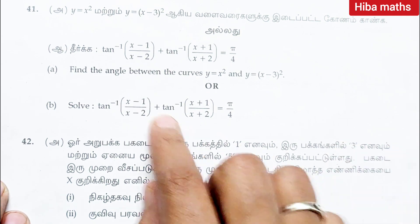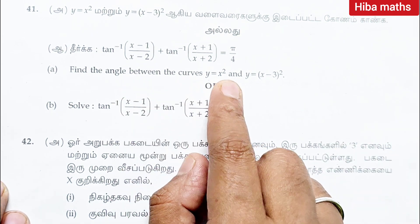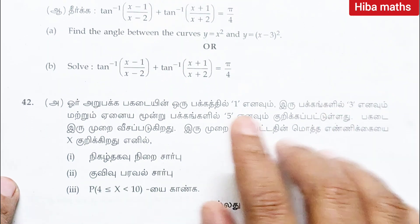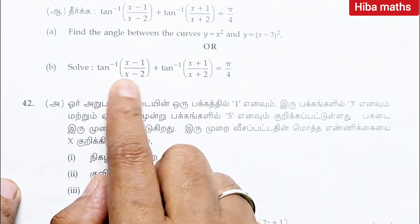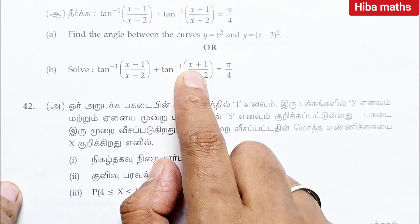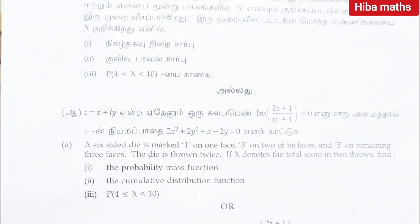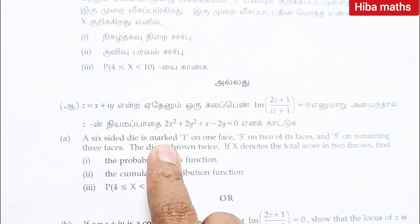Question 41: find the angle between the curves y is equal to x square and y is equal to x minus 3 whole square, or solve tan inverse of x minus 1 by x minus 2 plus tan inverse of x plus 1 by x plus 2 is equal to pi by 4.